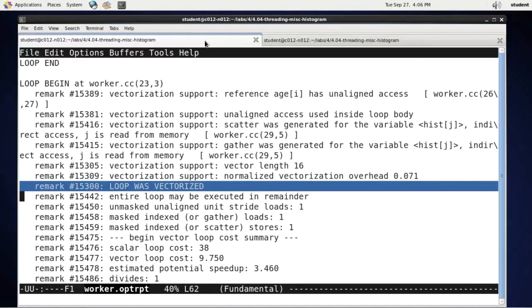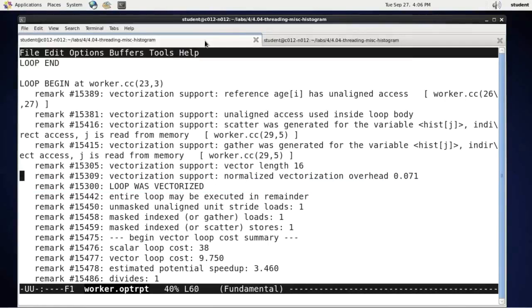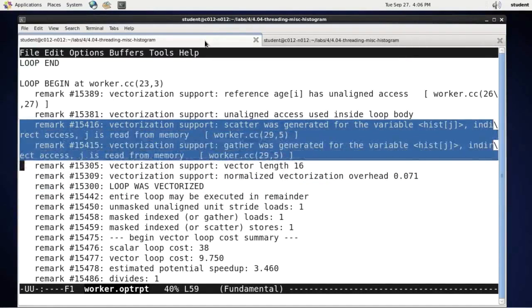It is vectorized, and the compiler treated the hist array gracefully by generating a scatter and a gather for it. It makes a comment about divides in the loop, which is something that I can address before I move on. This is something easy to understand - the division operation is usually a lot slower than multiplication. It does apply to Knights Landing architecture, and let me show you what happens when I replace division with multiplication.